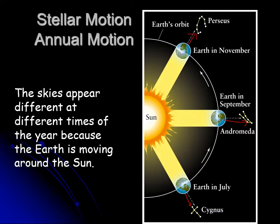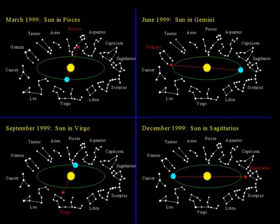Because Earth goes around the Sun, stars that are overhead tonight will be overhead at the same time of night a few weeks or a month later. The sky shifts a little bit just because Earth is moving.